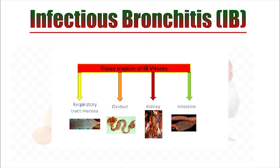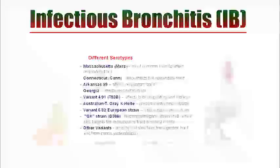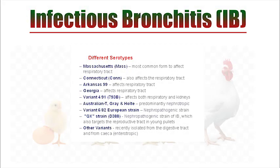The virus has different serotypes including oviduct, kidneys, and intestines as target organs. The major serotypes are Massachusetts, Connecticut, Arkansas 99, Georgia, Variant 4/91, Australian T, Gray and Holte, and Variant 6/92 European serotype, as well as the QX serotype and some other variant serotypes.